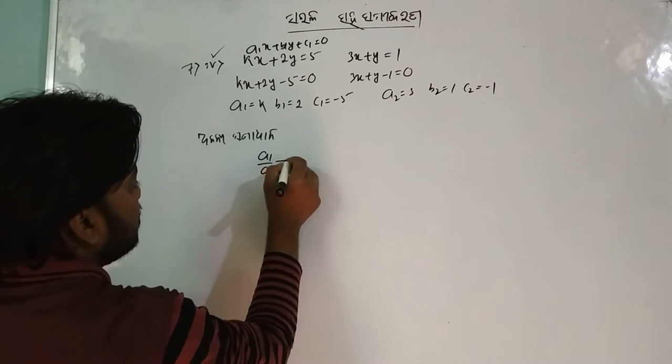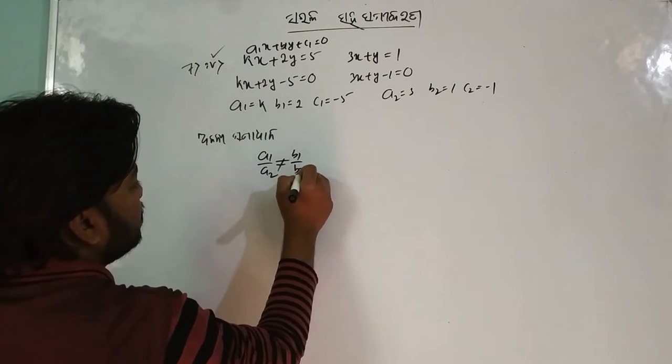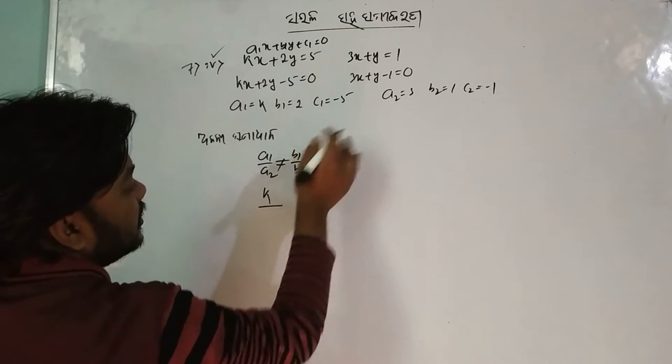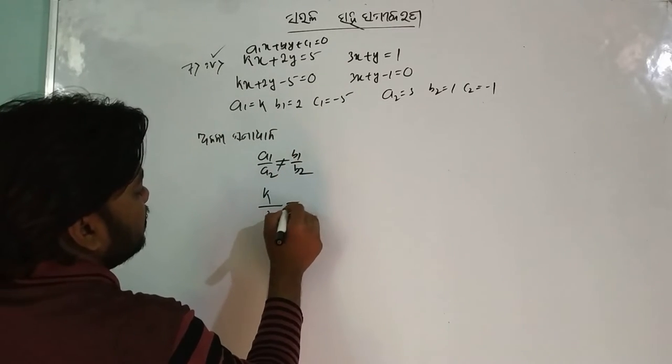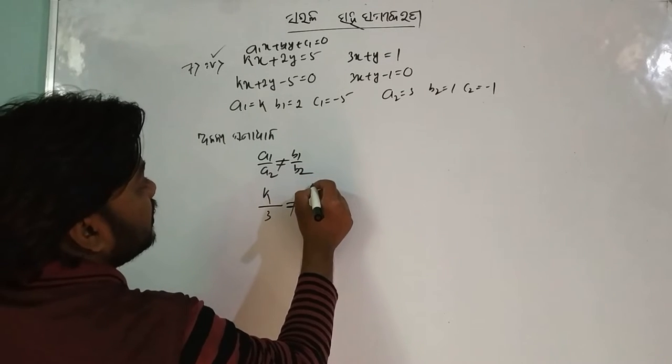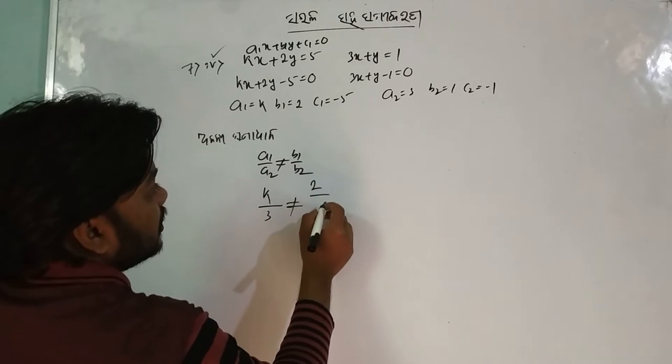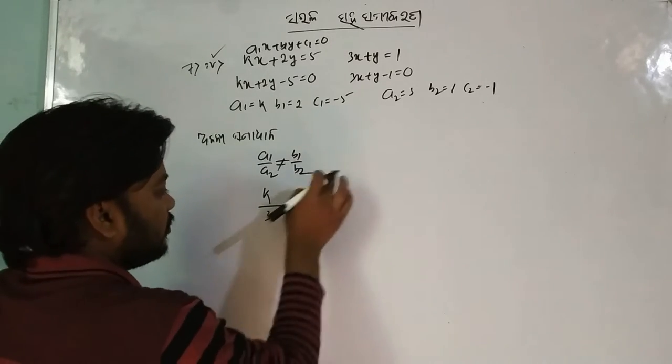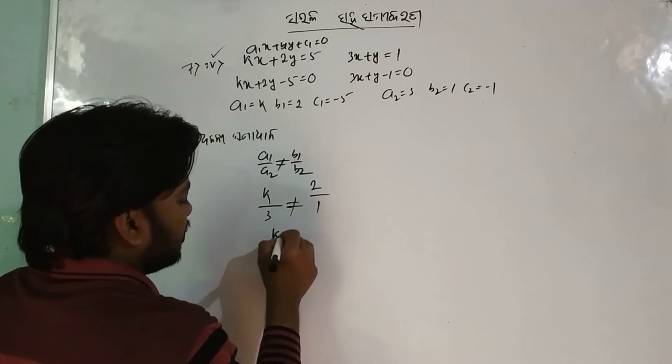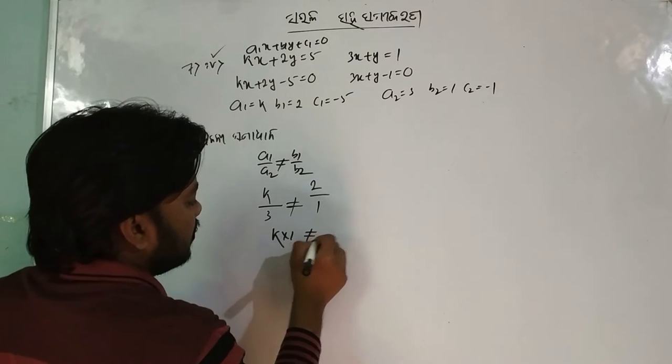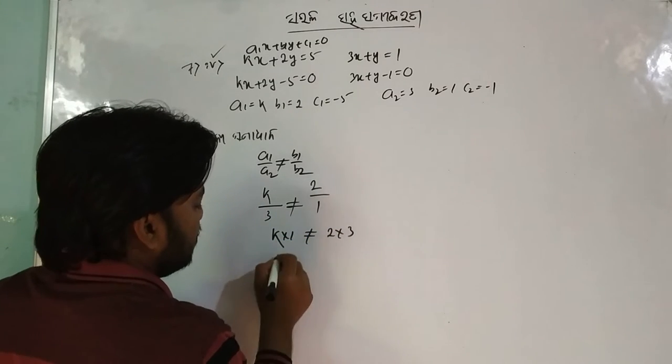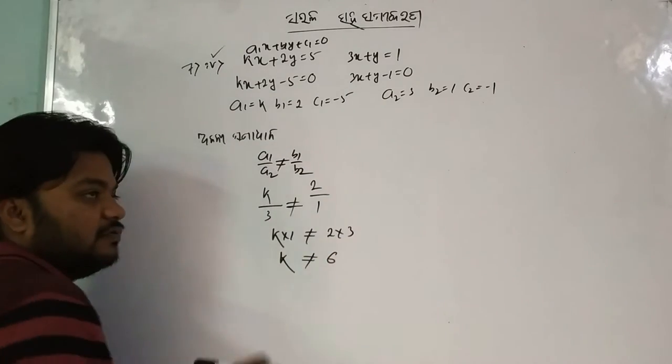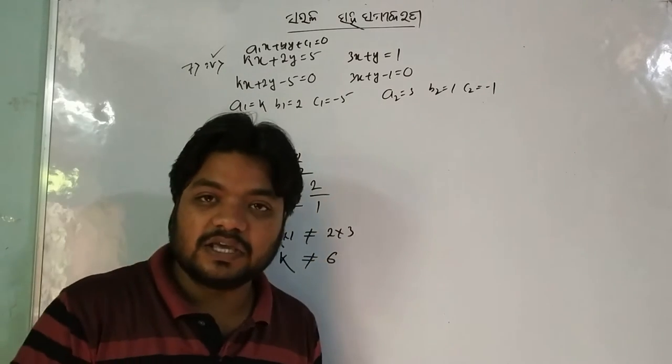a1 by a2 is not equal to b1 by b2. We have to multiply it. K is equal to 2, and K is equal to 3, and K is equal to 6.